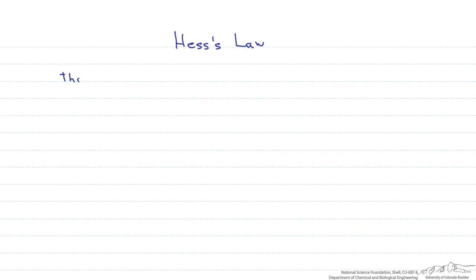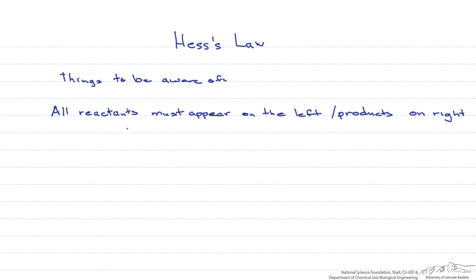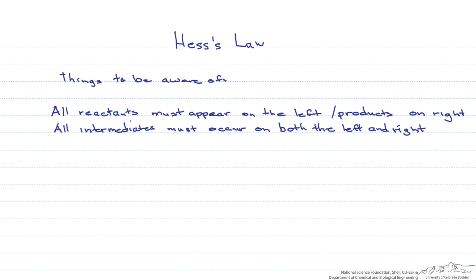Here are the things you need to be aware of when doing a Hess's law calculation. First of all, all reactants must appear on the left hand side, and all the products have to appear on the right. Also, all intermediates must occur on both the left and right side of the reaction so that they can cancel each other out, since they aren't part of our reaction of interest.